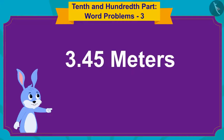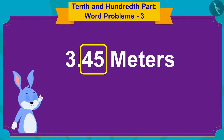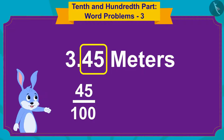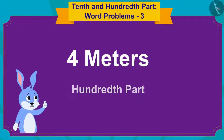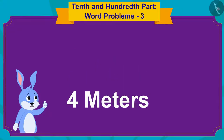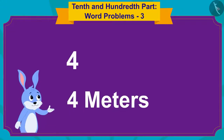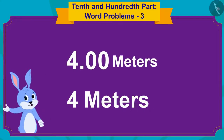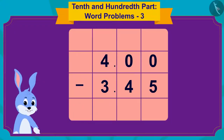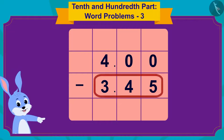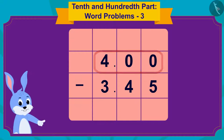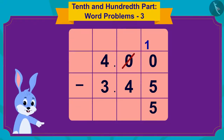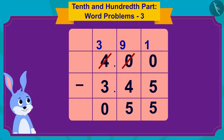In 3.45, the 45 is the 45 hundredth part. But there is no hundredth part in 4, so I can also write 4 as 4.00. Now I will subtract 345 from 400 first using this simple process of subtraction. That makes it 55.